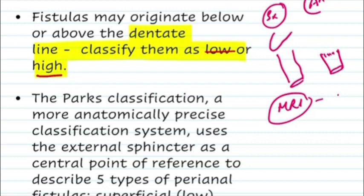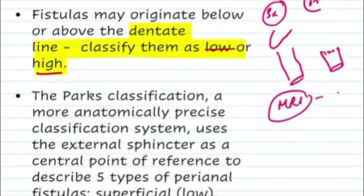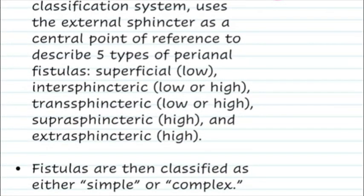Parks' classification, having five types of fistulas, can also be labeled as low or high. The superficial ones are always low, while the extrasphincteric and suprasphincteric are always high, and the intersphincteric and transsphincteric can be either high or low.